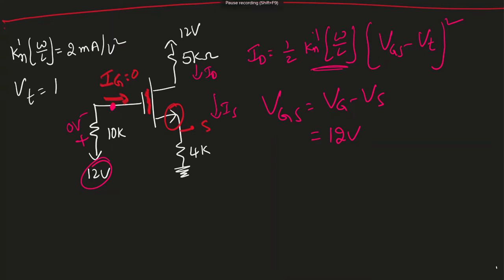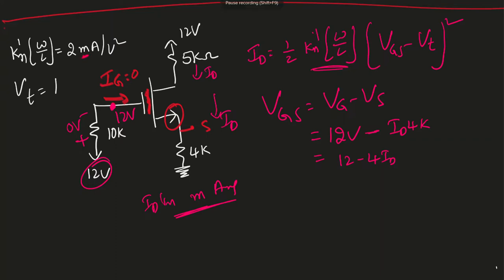I don't know VS directly, but I can find it. Since ID equals IS, the voltage VS is simply ID times 4kΩ. Taking ID in milliamperes, I can cancel the kilo, so VS = 4·ID. Therefore VGS = 12 − 4·ID. Substituting into the saturation equation: ID = (1/2) · 2 · (12 − 4·ID − 1)², which simplifies to ID = (11 − 4·ID)². Everything is in milliamperes.